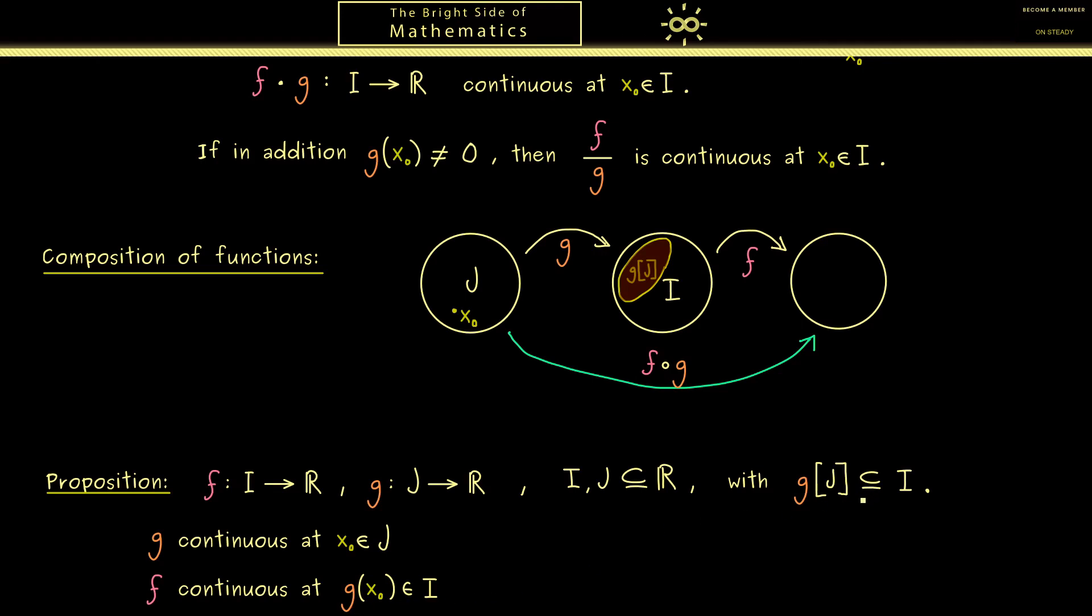However here we had the whole set and to distinguish both cases I used the other brackets here. Okay now for continuity we put these two things in and we get out that the function f after g defined on the domain J is also continuous at the point x0.